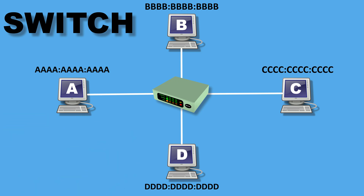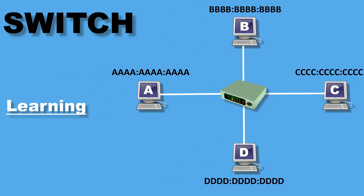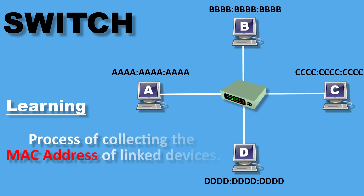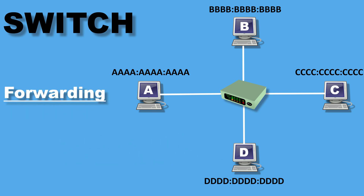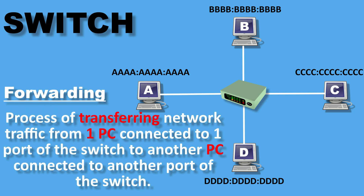Let's see how it works. Learning is the process of collecting the MAC addresses of linked devices. Forwarding is the process of transferring network traffic from one PC connected to one port of the switch to another PC connected to another port of the switch.